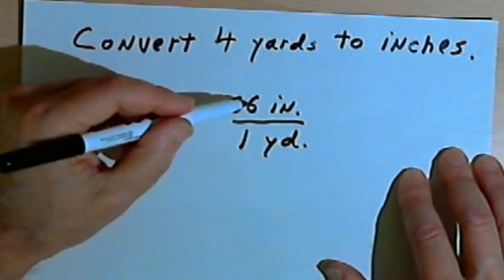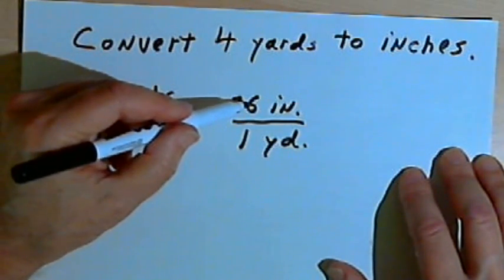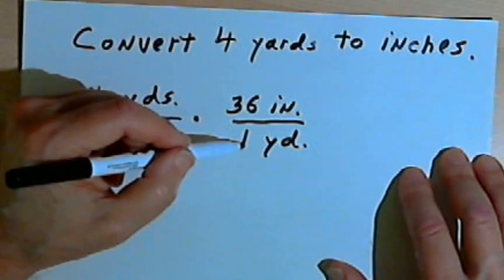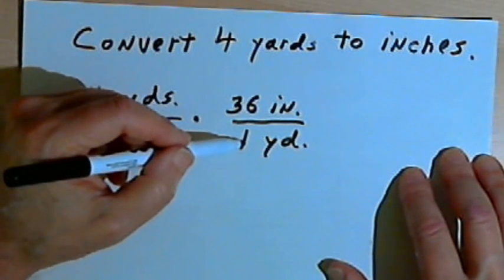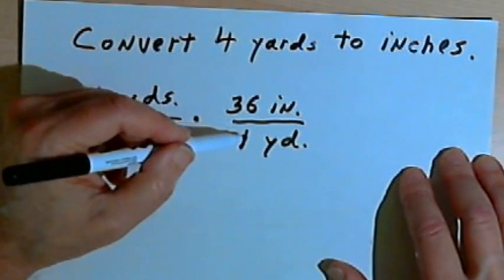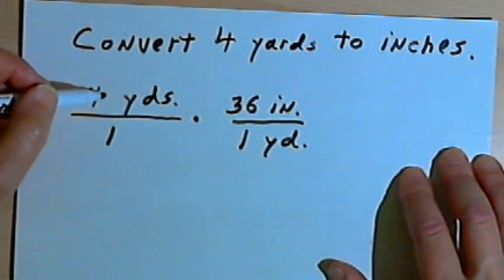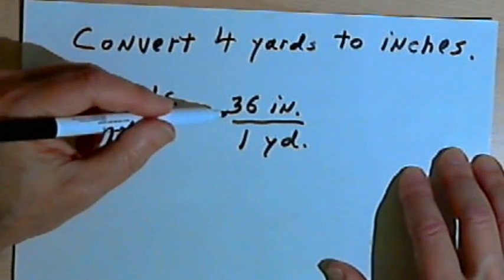Now this fraction equals 1 because 36 inches is the same as 1 yard. When my numerator and denominator are the same, then the fraction equals 1. So all I'm doing is taking 4 yards and multiplying it by 1.